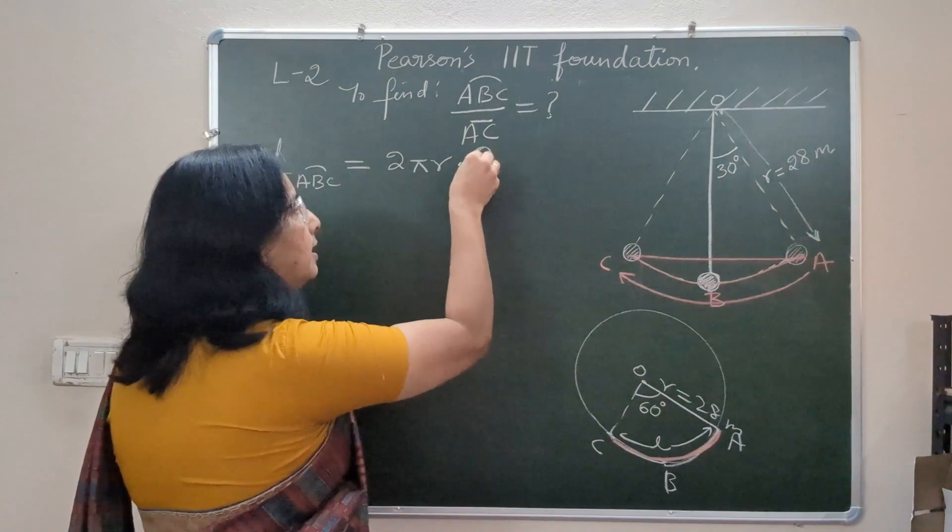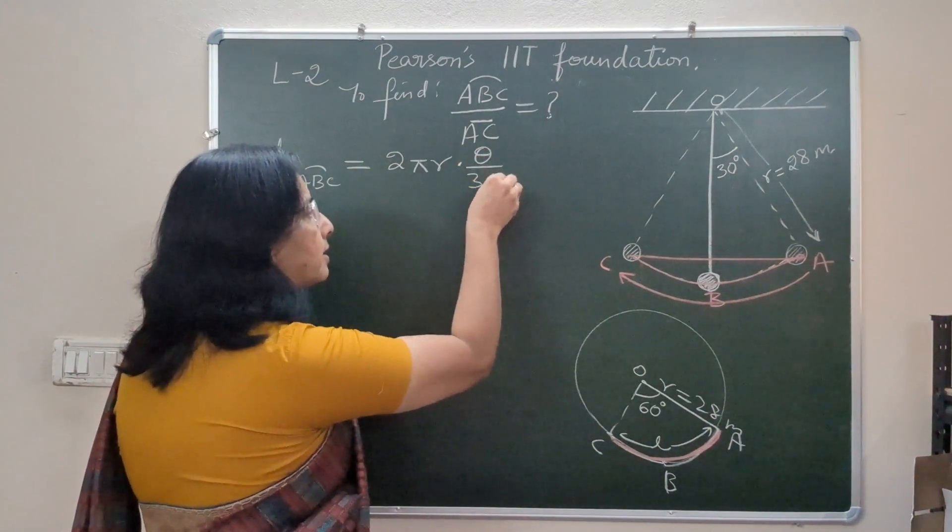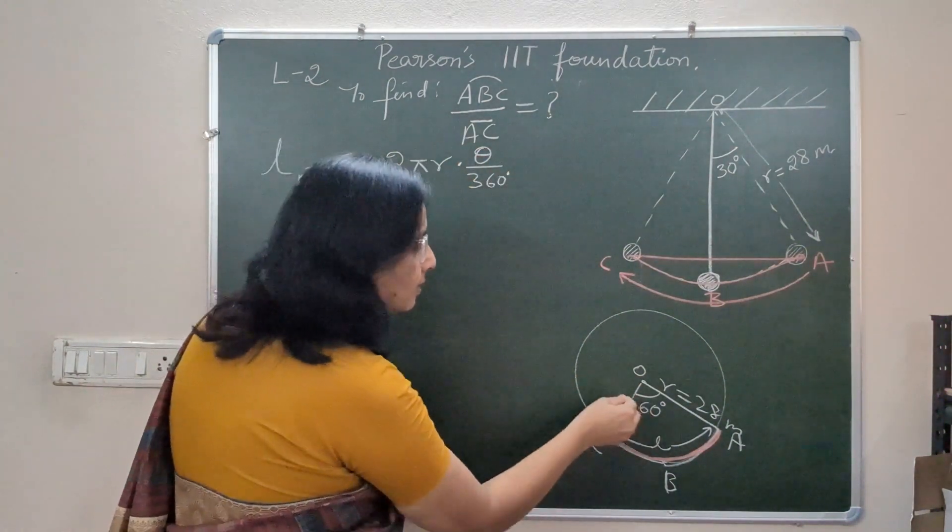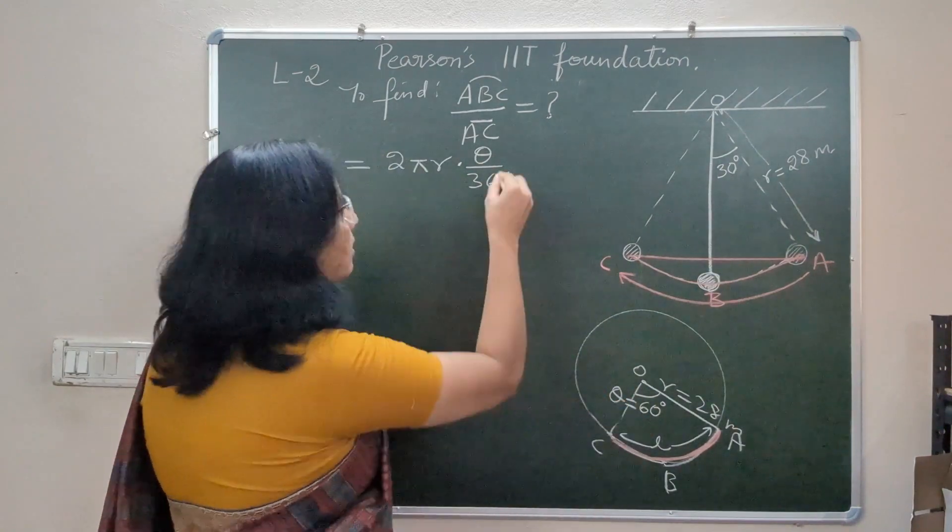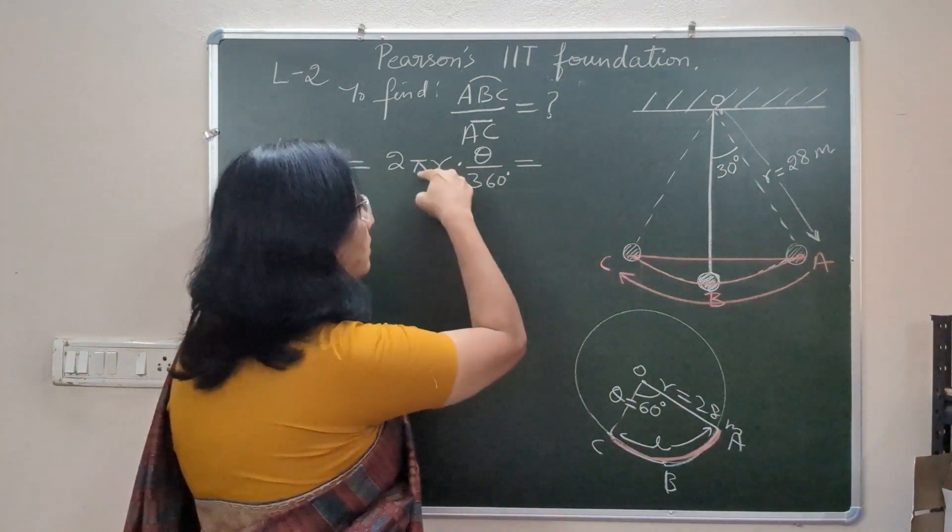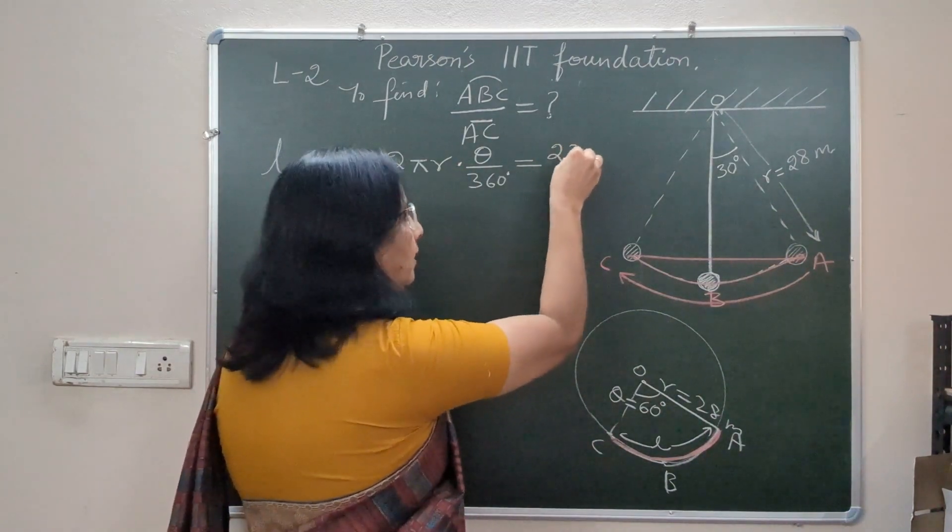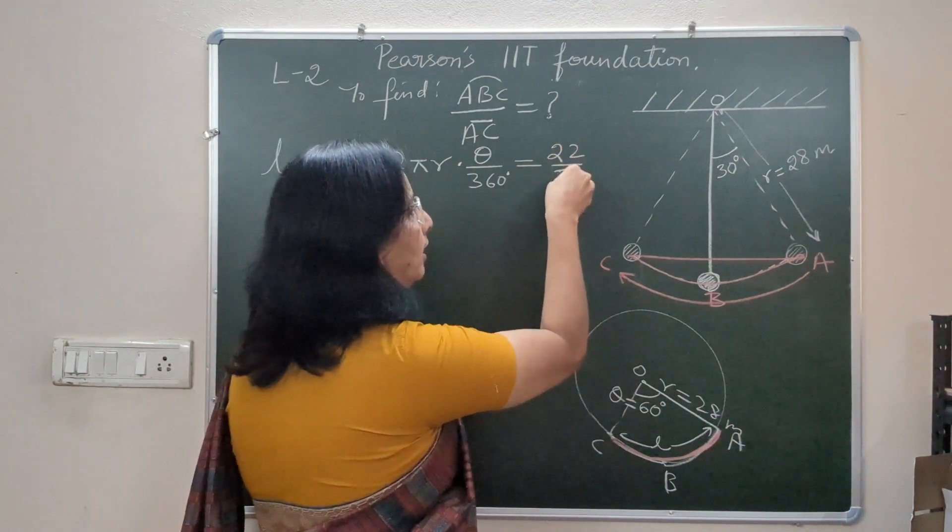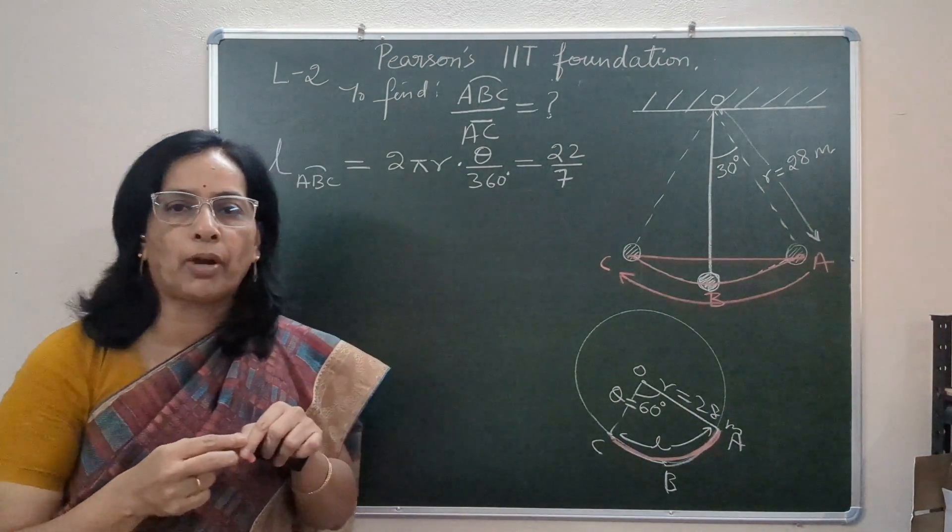So 2 pi r theta by 360 degrees. Theta is 60. So 2 and 360 cancel. Pi right now I am taking as 22 by 7. I can also take it as 3.14 if required.